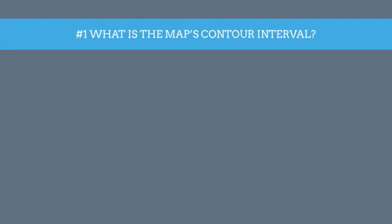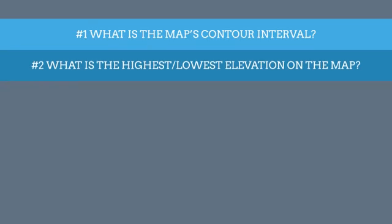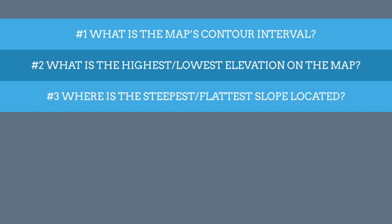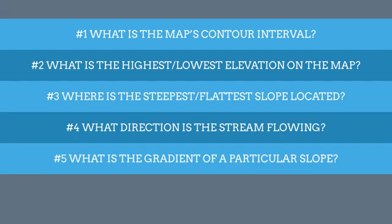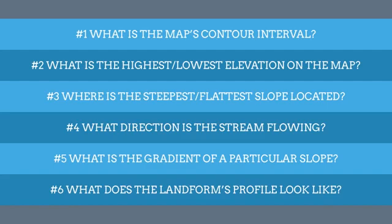And it really boils down to six basic questions that need to be answered. First, what is the map's contour interval? Second, what is the highest or lowest elevation shown on the map? Third, where is the steepest and flattest part of the map? Fourth, what direction is a stream or a river flowing? Fifth, what is the gradient of a particular slope? And sixth, what does this landform look like from the side? In other words, what does the profile view look like?